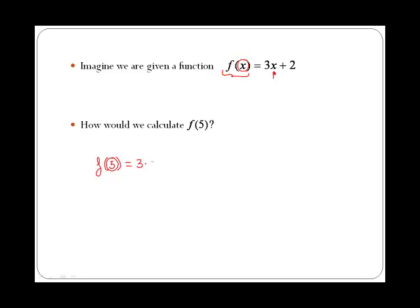3 by, and now instead of an x we have a 5, plus 2. 3 by 5 is 15, plus 2 is equal to 17.